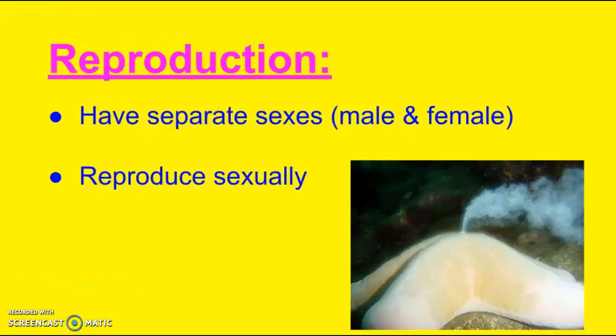Echinoderms do have separate sexes, so some are male and some are female, and they reproduce sexually. Just like we've seen with other invertebrates, the starfish in this example releases sperm that will then go and fertilize eggs that have been released. That fertilized egg will develop into a larva, and that larva will then go through metamorphosis.